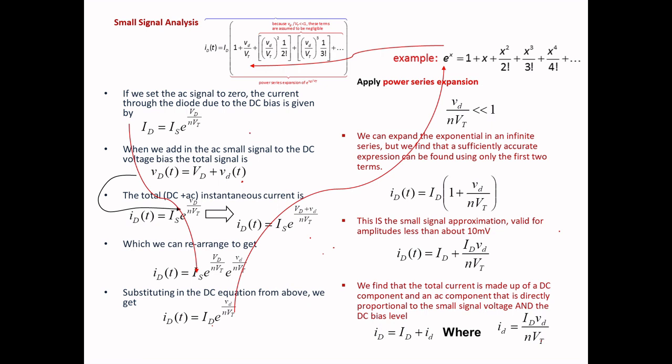Now I will come to the mathematical expression. This is with respect to when you're not applying any AC signal - just the DC part. So ID equals IS exponential of VD divided by eta VT. I can write the total instantaneous as capital VD plus small vd - the combination of DC and AC.